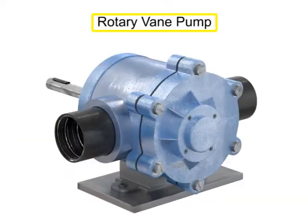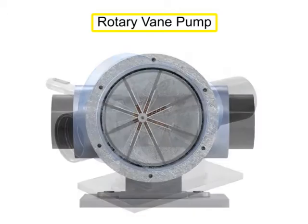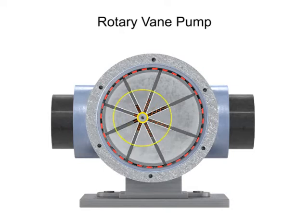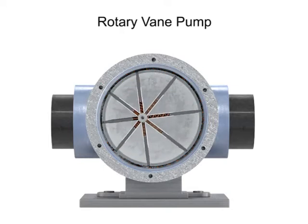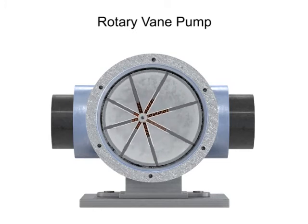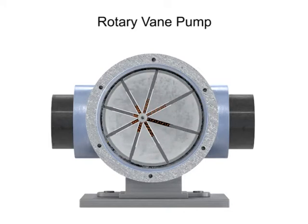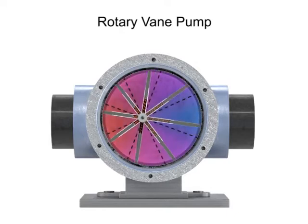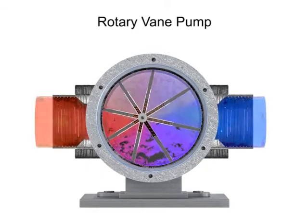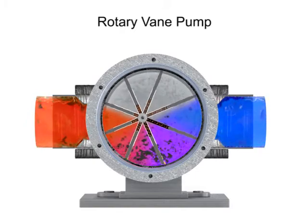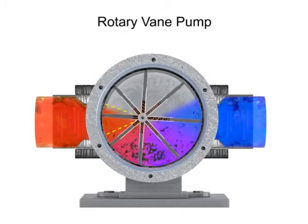A rotary vane pump is a positive displacement pump that consists of vanes mounted to a rotor. The vanes are on an off-center drive shaft. As the shaft rotates, the variable length vanes slide in and out to maintain contact with the pump housing. The tension in the vanes is maintained by either springs or hydraulic pressure. As the vanes rotate, they create chambers of varying sizes within the pump. Fluid enters at the largest chamber, and as the vanes rotate and retract, the chambers get smaller, forcing fluid to exit through the discharge port.